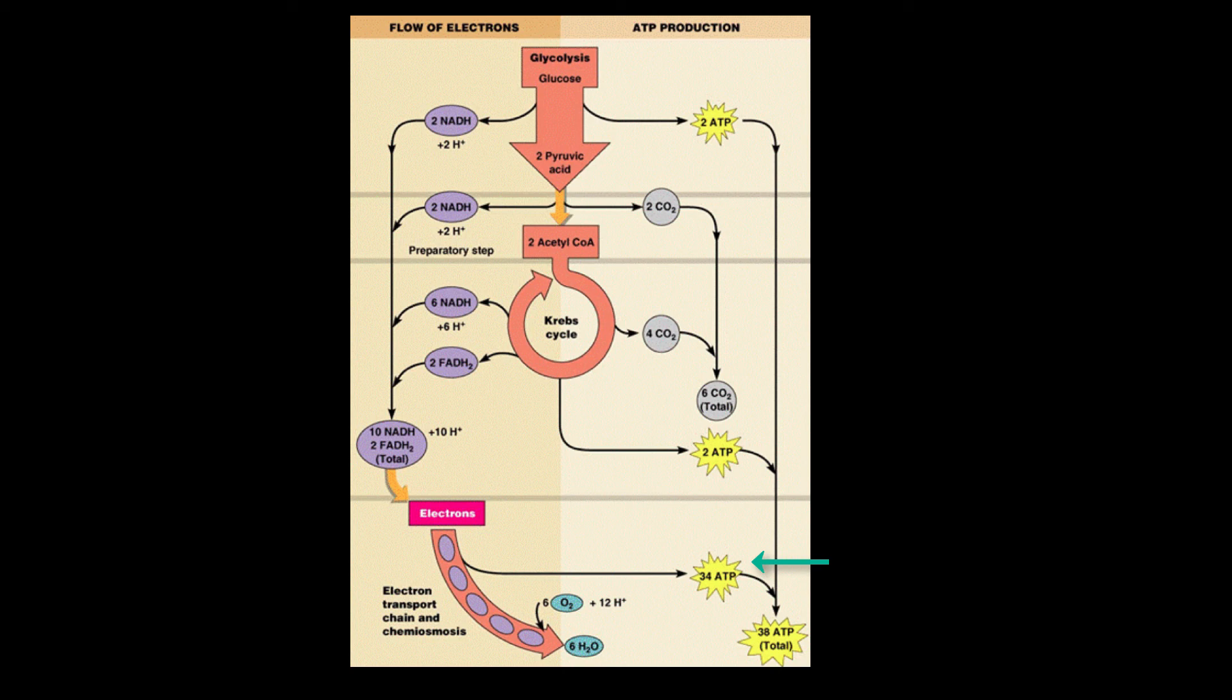So from the electron transport chain, we're going to get 34 ATP plus two from glycolysis, two from the Krebs cycle is 38 ATP total from our one molecule of glucose.